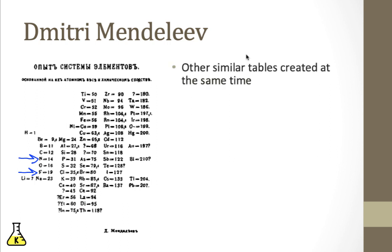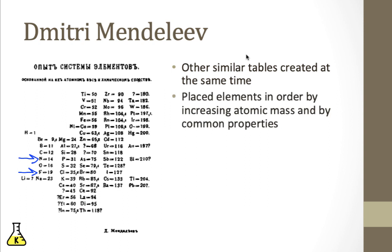Now interestingly enough, Mendeleev was not the only scientist working on this. There were other scientists out there that created similar periodic tables at the same exact time. And he, like many of these other scientists, placed elements in order of increasing atomic mass and tried grouping elements by common properties. Nitrogen and phosphorus and arsenic were put in the same group because all of them have similar chemistry. And that's how we were trying to organize elements.